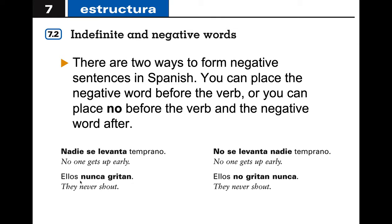For example, 'ellos nunca gritan' — 'nunca' is used before the verb. But if I write it as 'ellos no gritan nunca,' the 'no' must come before the verb so that we have the indication of that negative happening.